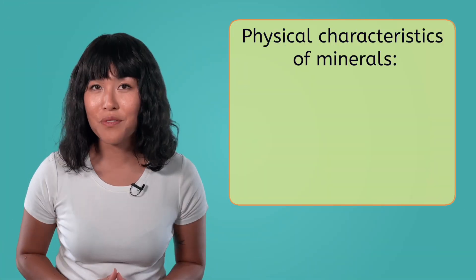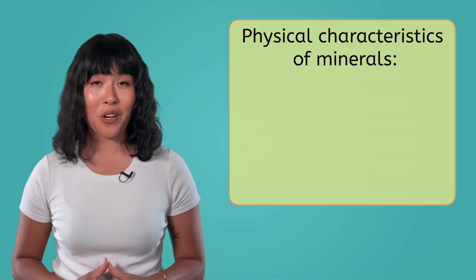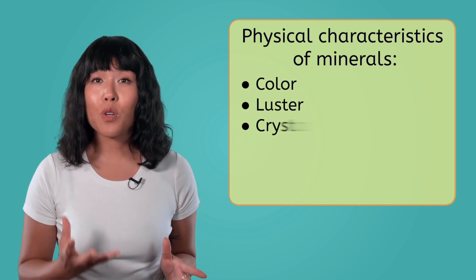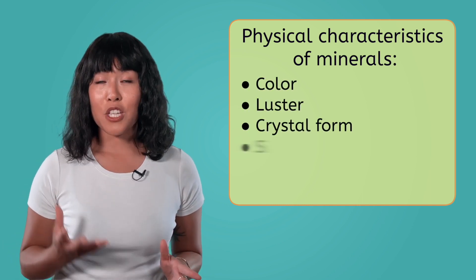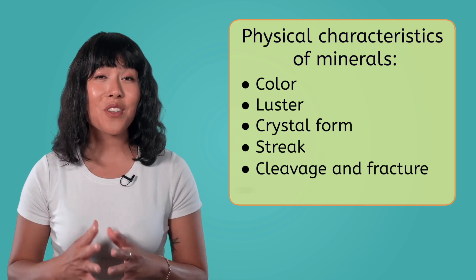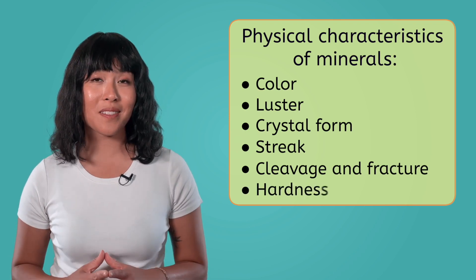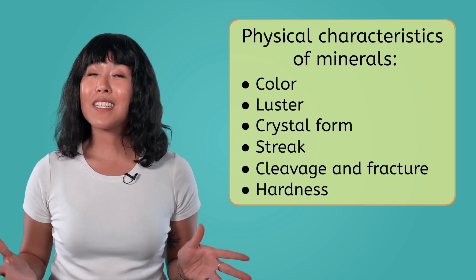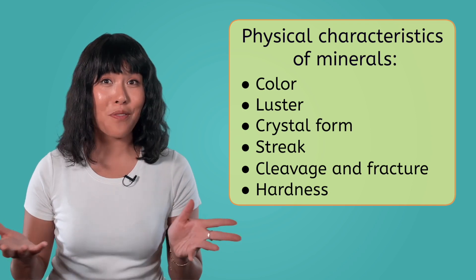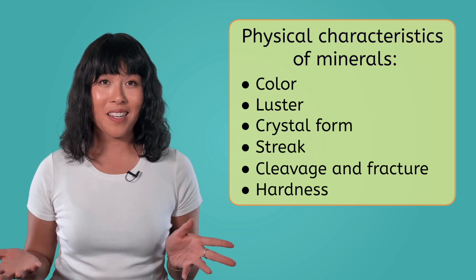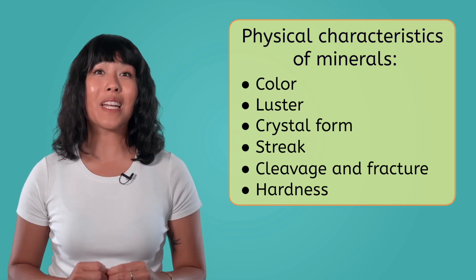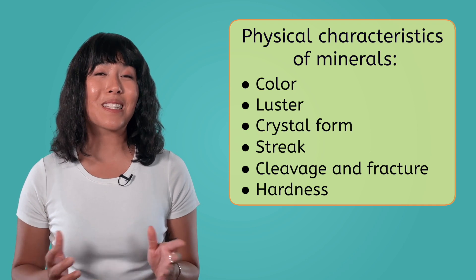Minerals have lots of different physical characteristics, like their color, luster, crystal form, streak, cleavage and fracture, and hardness. Scientists use these physical characteristics to identify minerals. So let's take a closer look at what each of these mean.